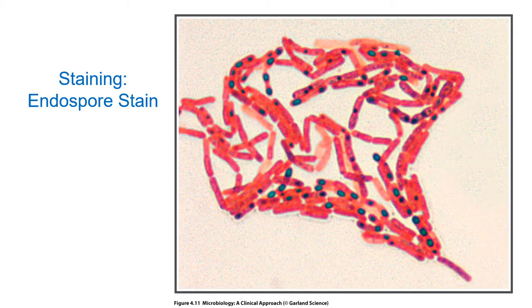We can also use heating to drive a stain into endospores. This is similar to acid-fast staining but uses a dye known as malachite green. Heating makes the very tough wall of the endospore more fluid, allowing the stain to enter. After cooling, the stain can't be removed by a decolorizing agent, allowing identification of endospores within gram-positive bacteria.